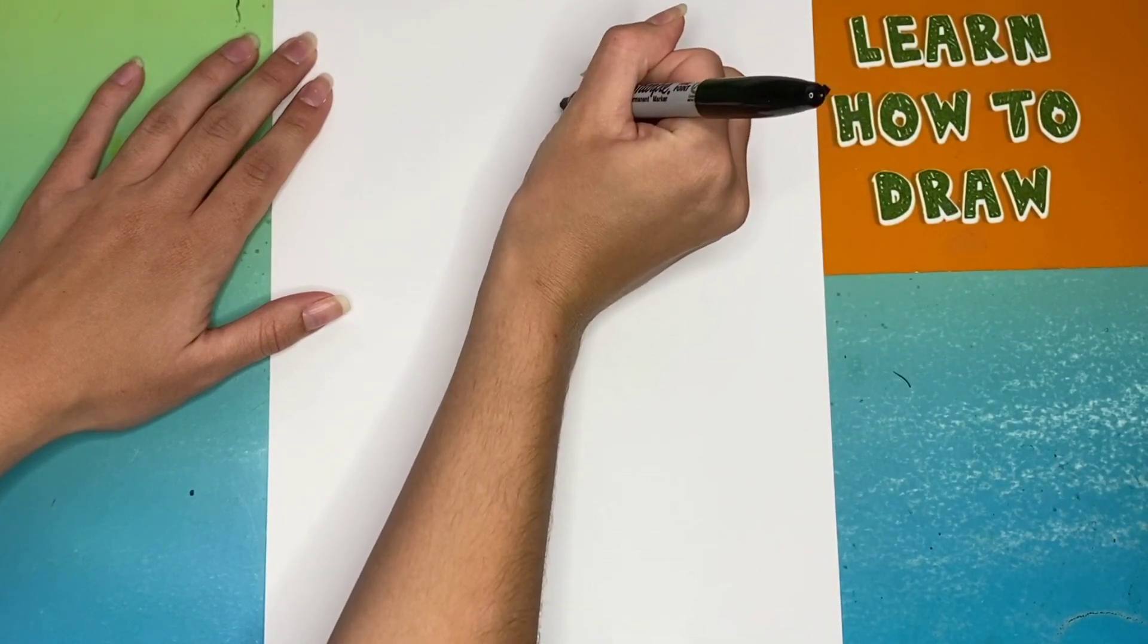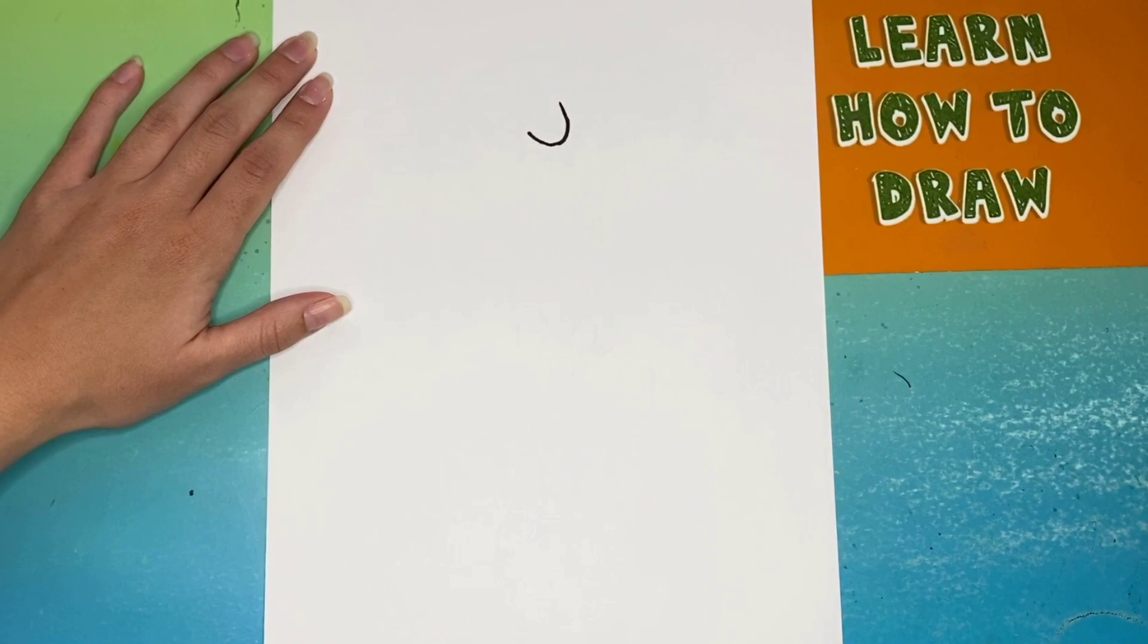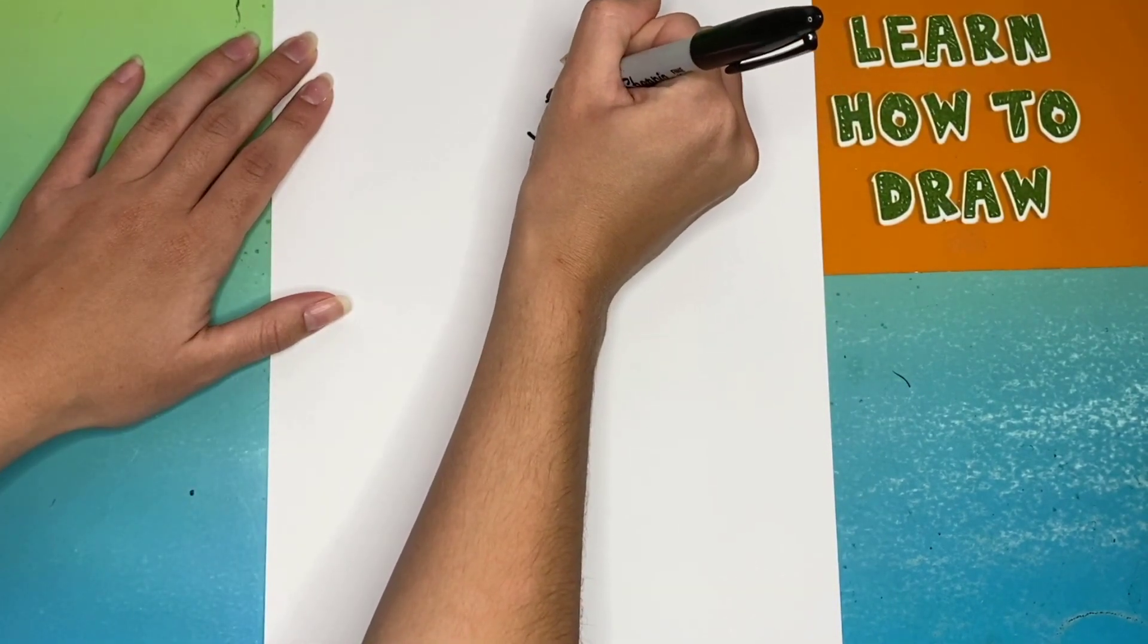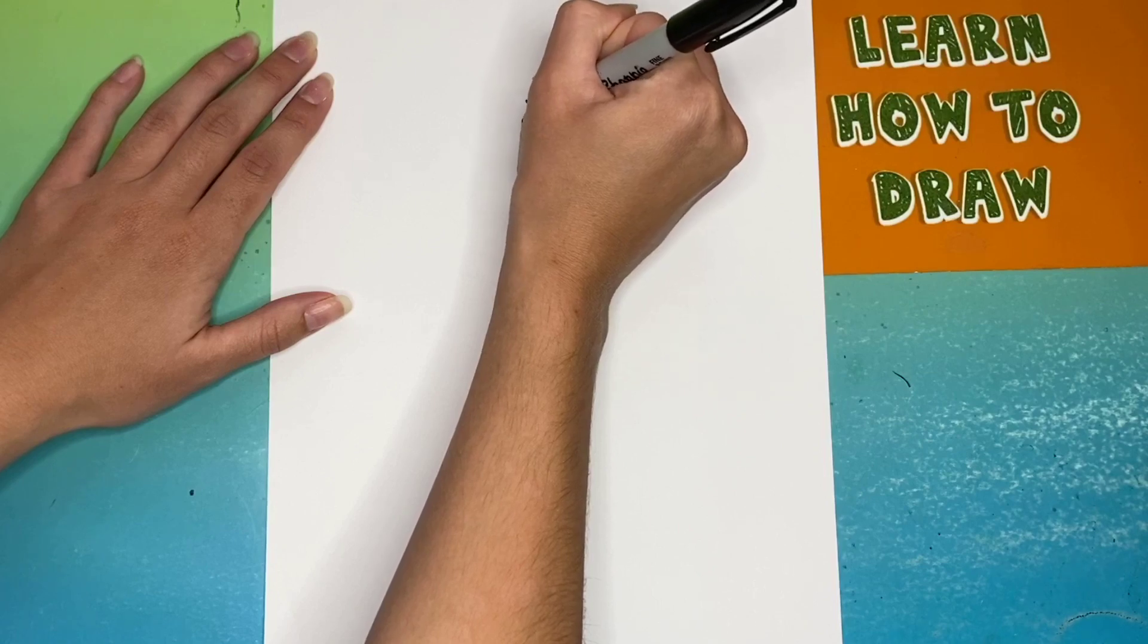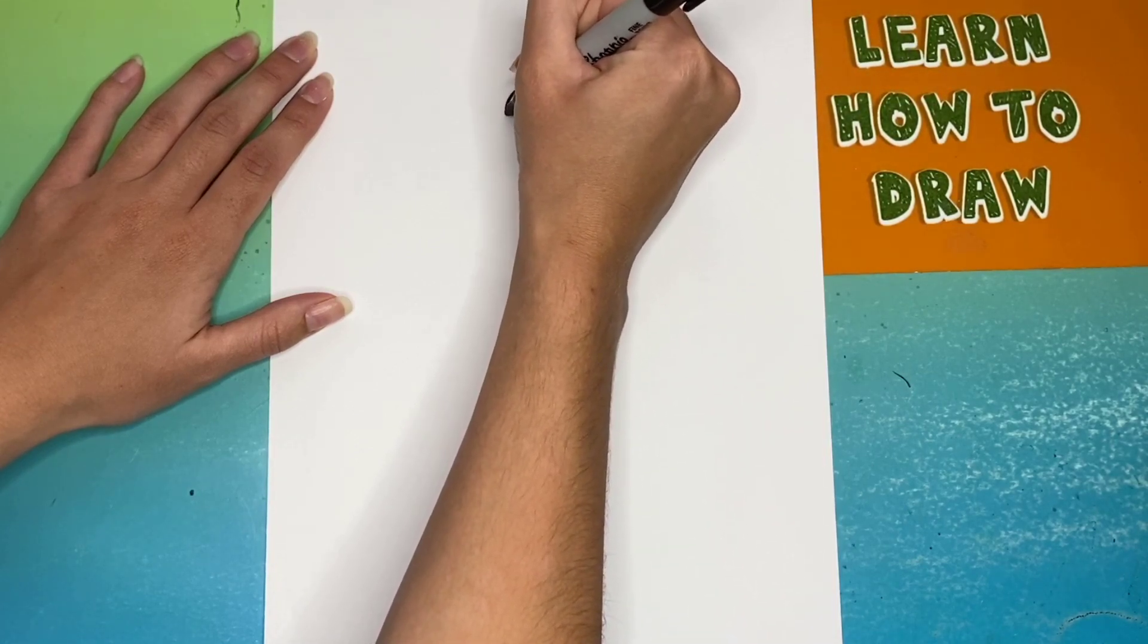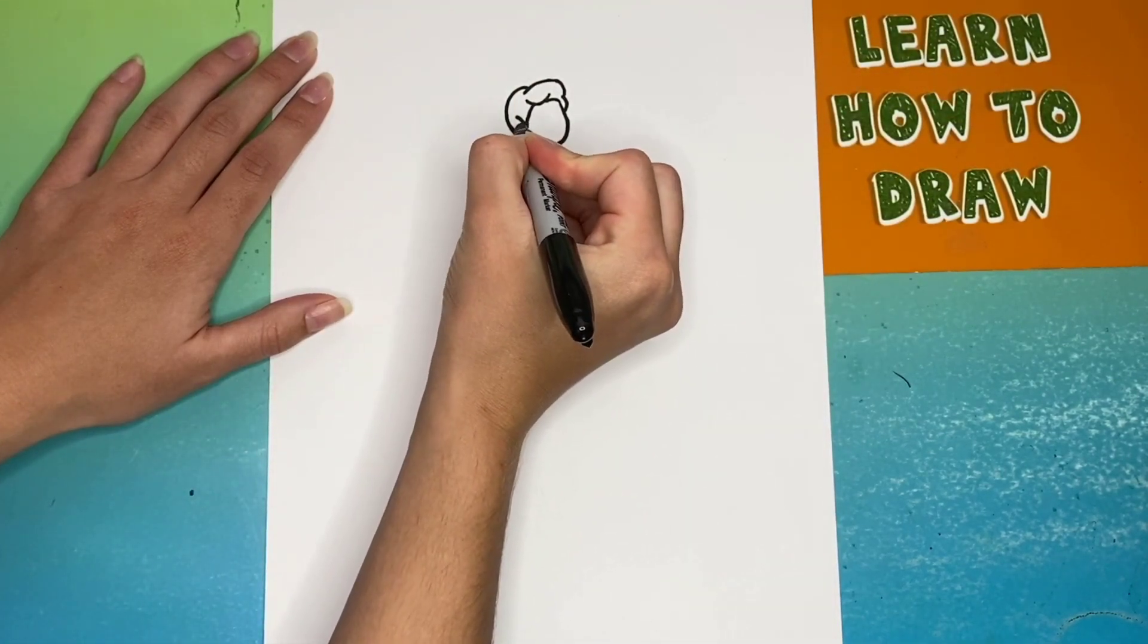We're going to start by drawing a small curve for the right side of Fred's face and his chin. Next we are going to draw Fred's hair. Then we're going to make a small C shape for Fred's ear.